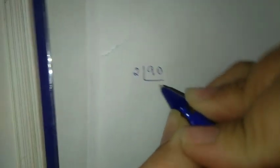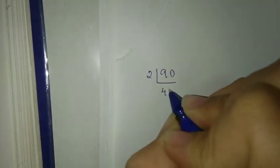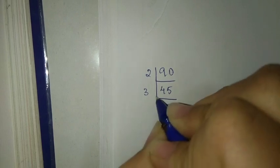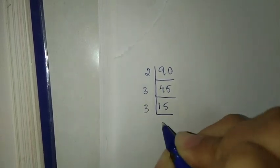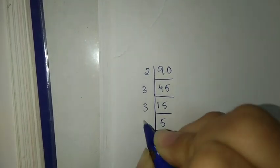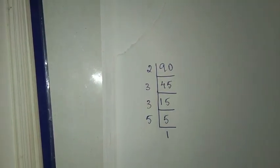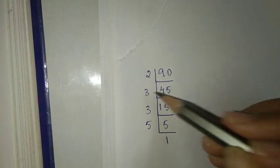The factors are 2, 3, 3, and 5. Now we need to group them together to get minus 33 as the sum.